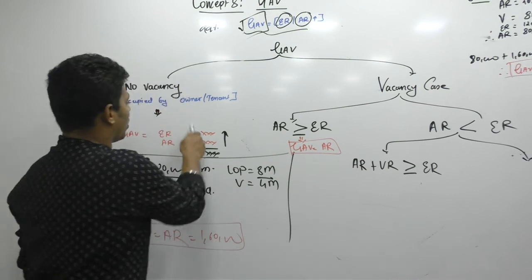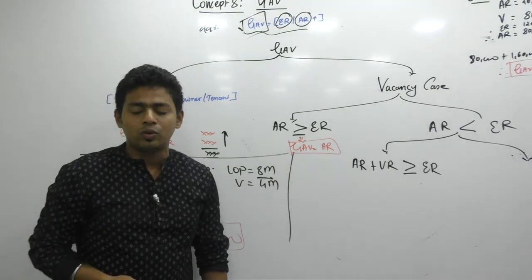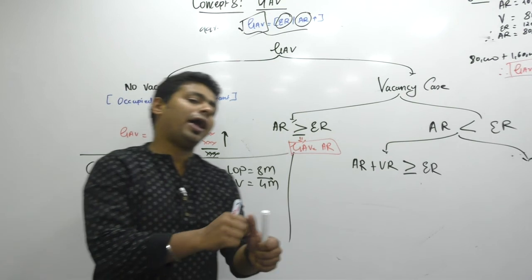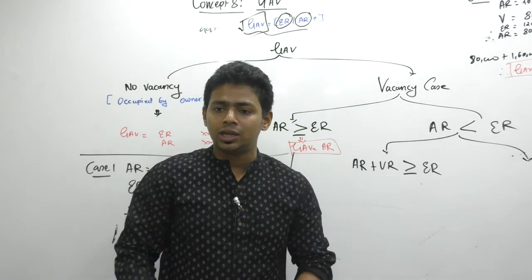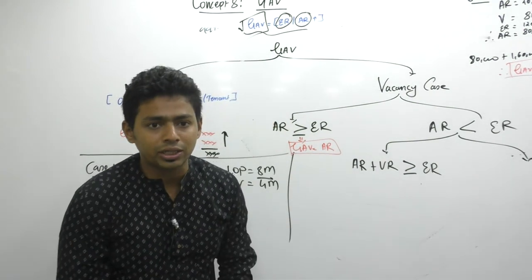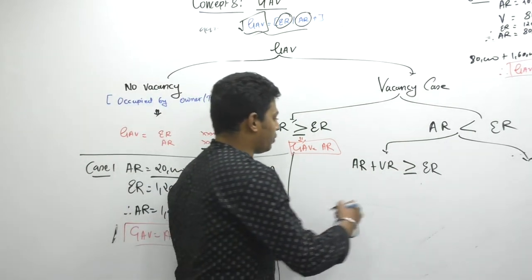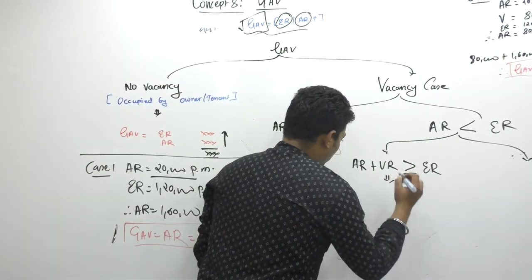Which law did you not follow? By default you would take whichever is higher. But here, we are not following whichever is higher — we are not taking 1,20,000. GAV is equal to actual rent.